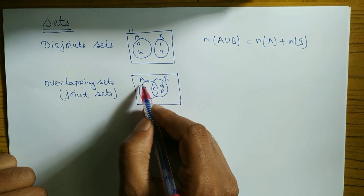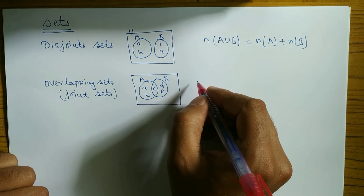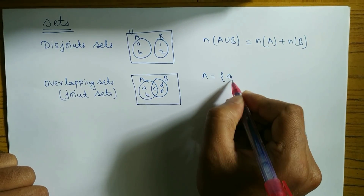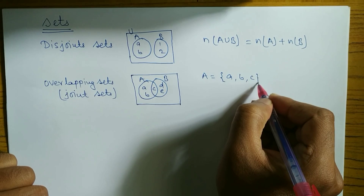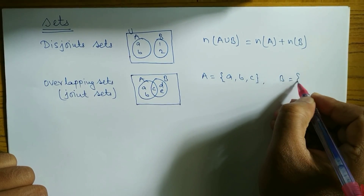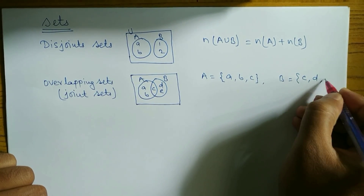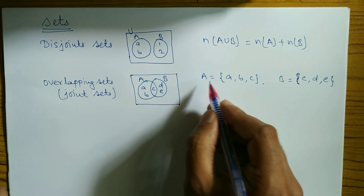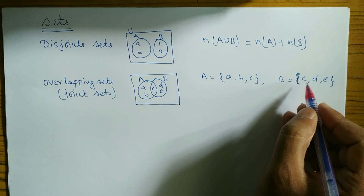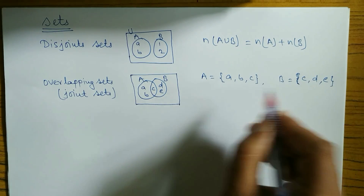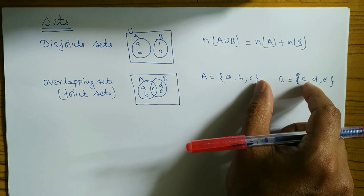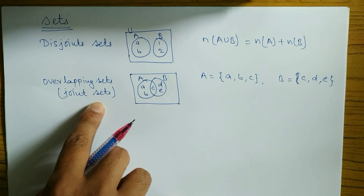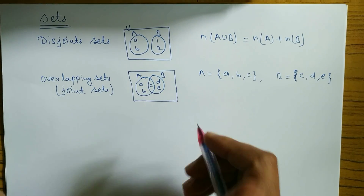Suppose the elements of A are {a, b, c} and the elements of B are {c, d, e}. Here, c is common to both set A and set B. So this type of set is known as an overlapping set or joint set because c is common.